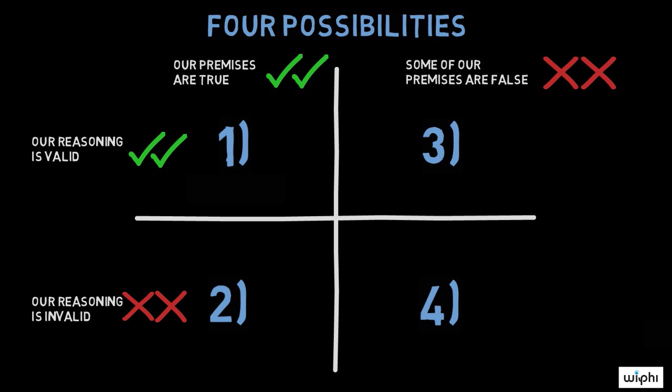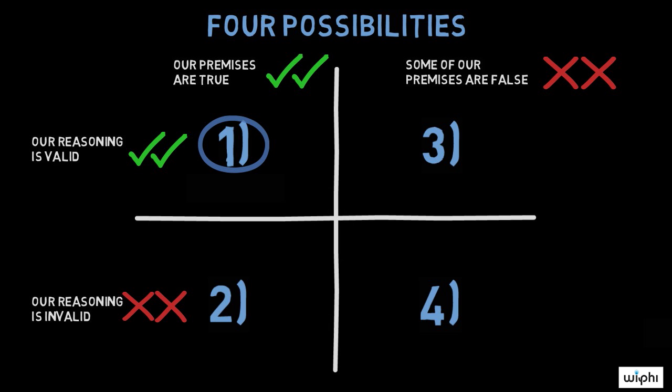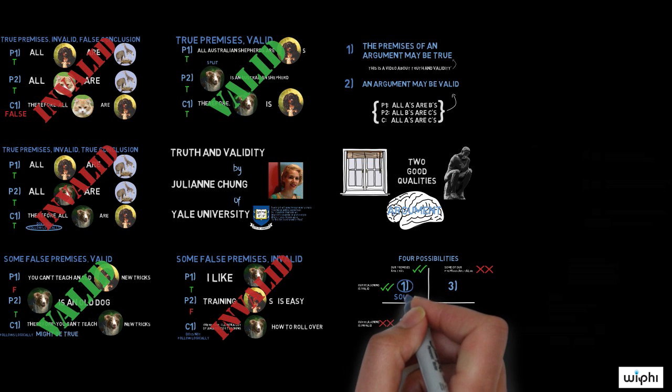When we are evaluating an argument, we should only accept its conclusions if the first possibility obtains. Philosophers call such arguments sound arguments.